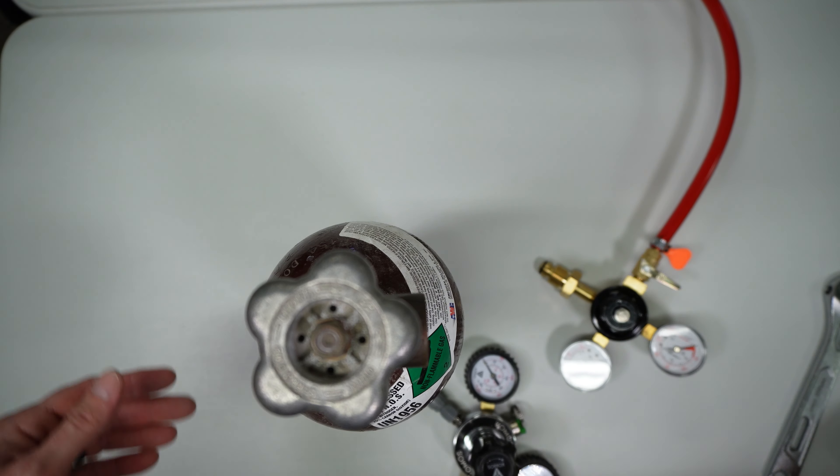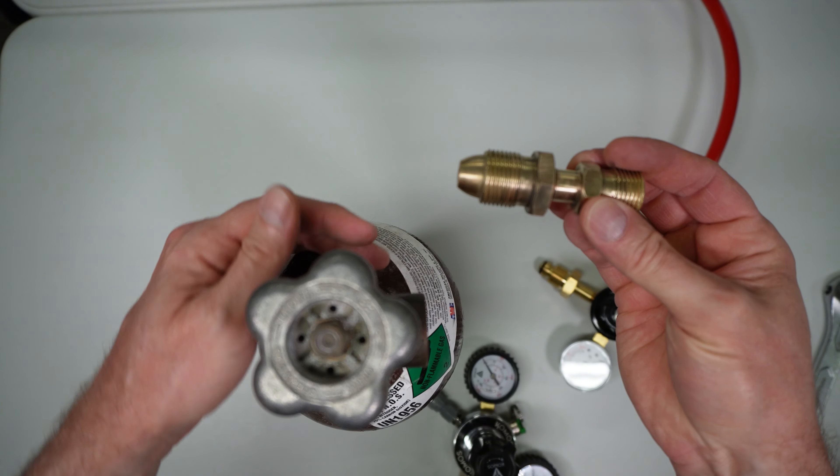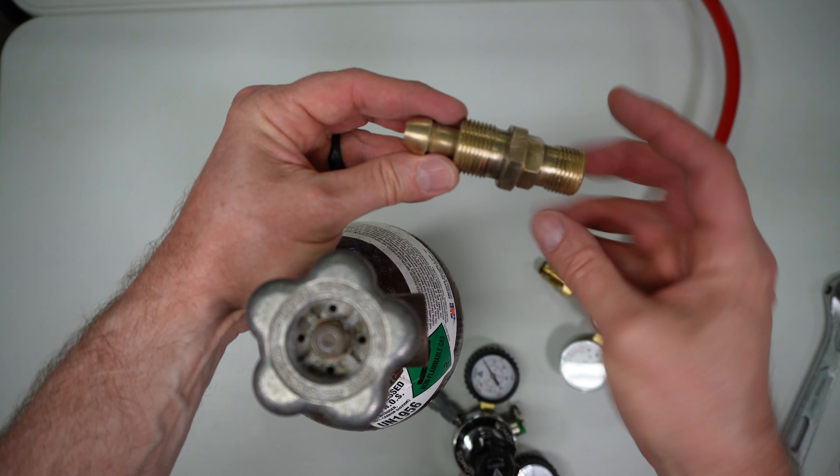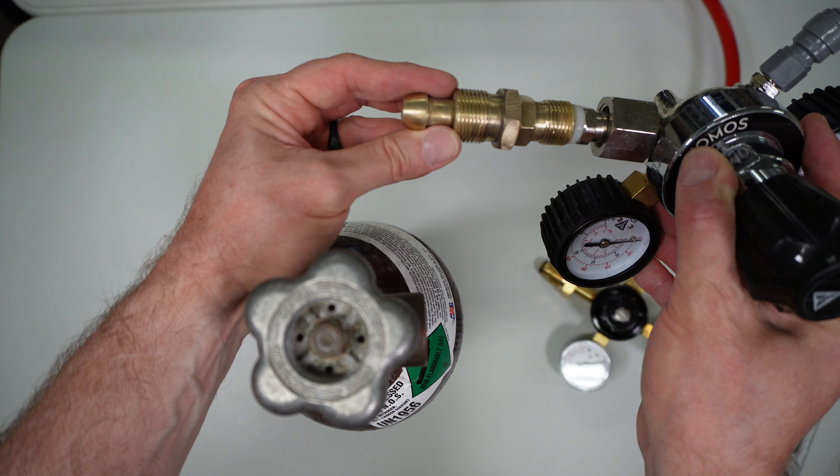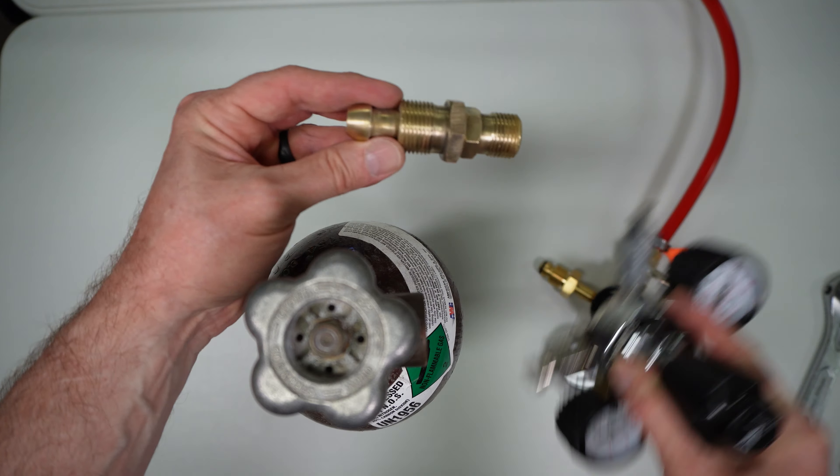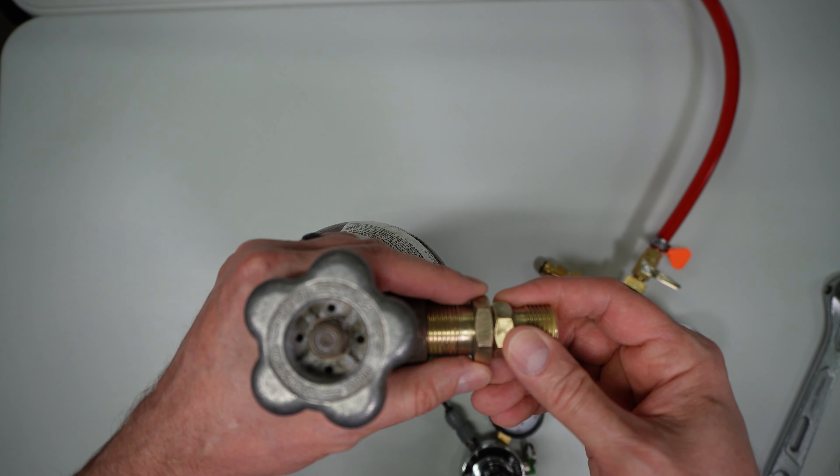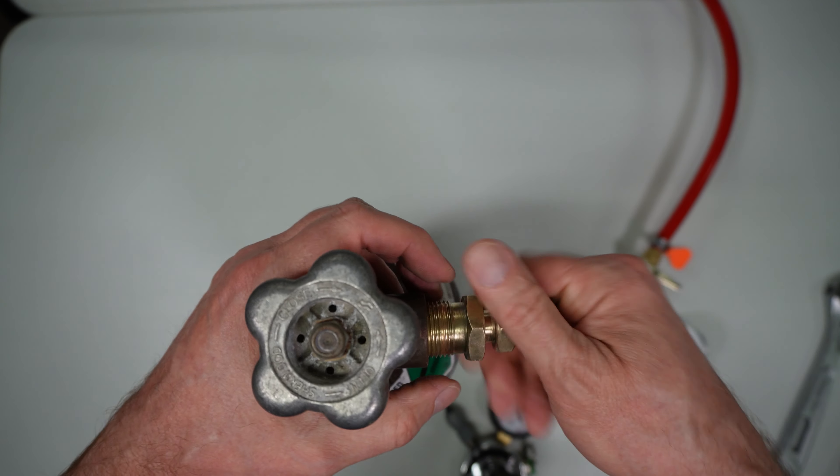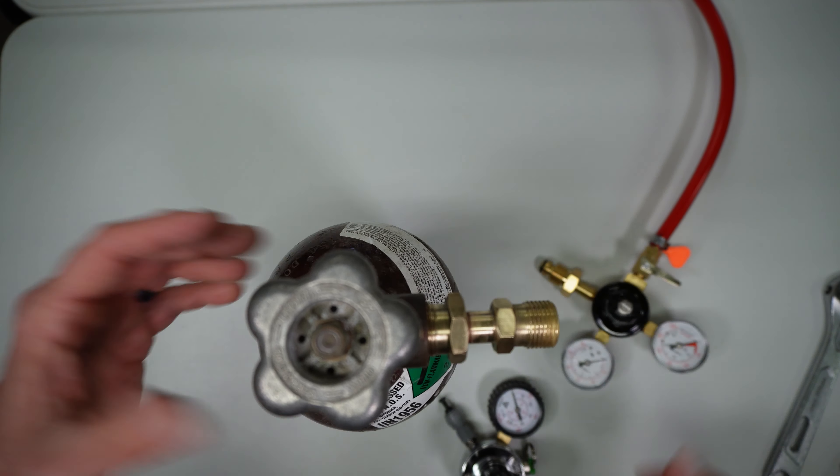What does this thing look like? Looks like this. This screws into here where the carbon dioxide would normally go. And then this screws into here and attaches. But here's my concern.